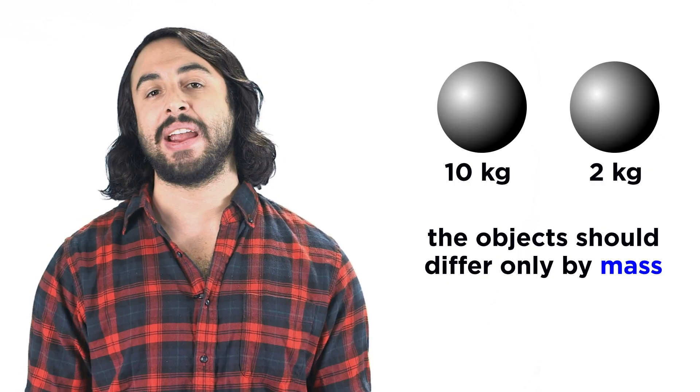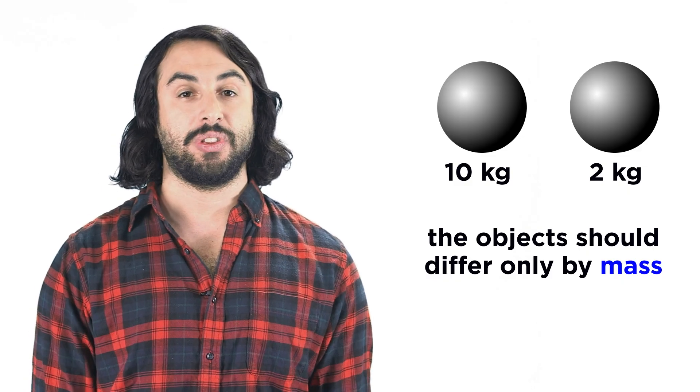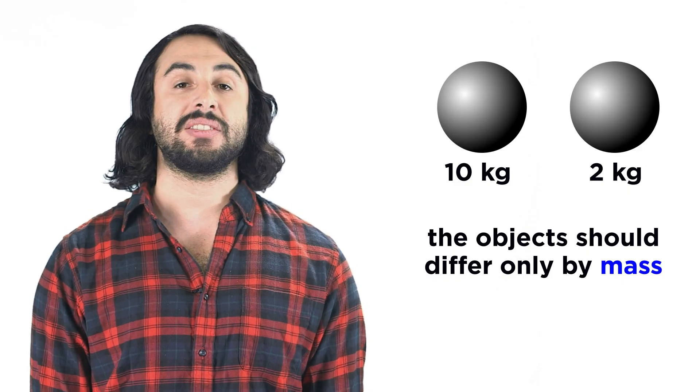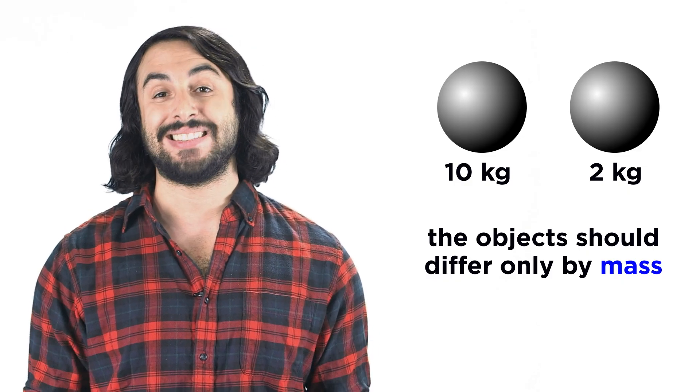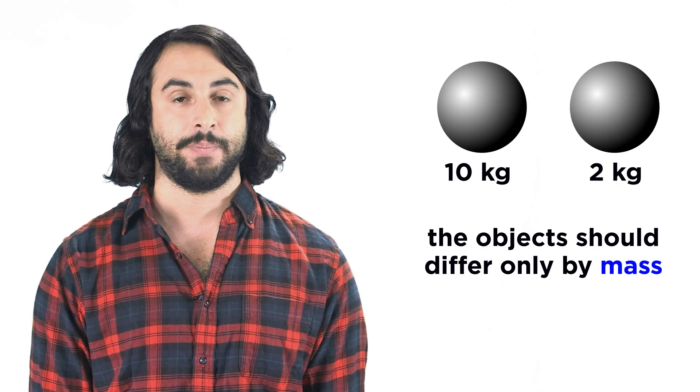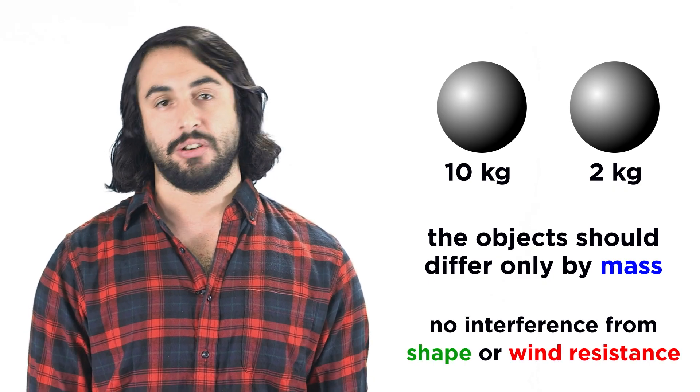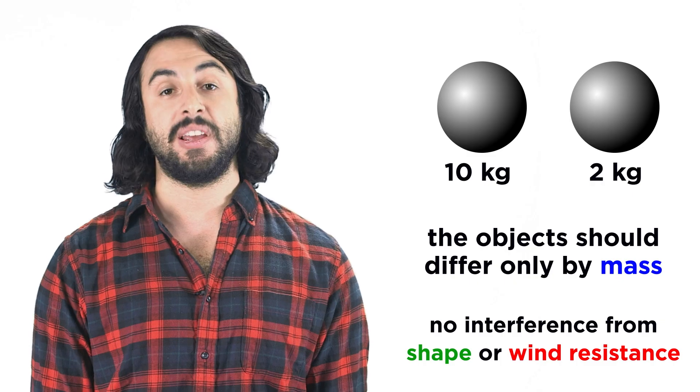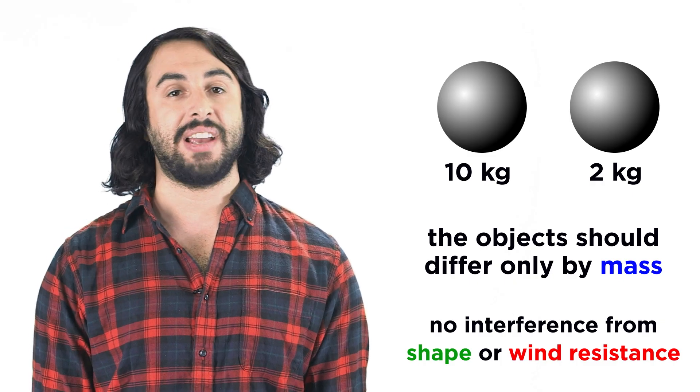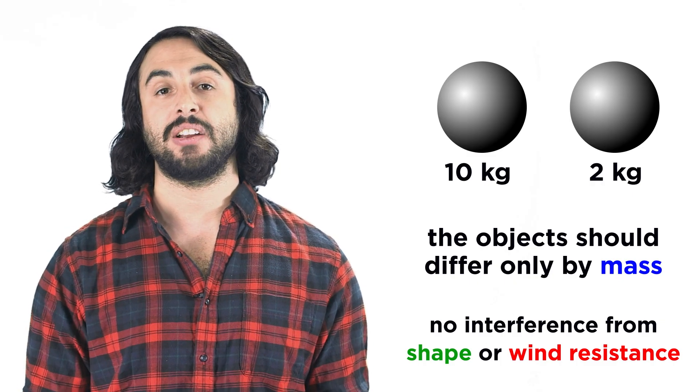So if we are testing how the rate of descent correlates with the mass of the object, we must drop two objects that are identical in every way apart from their mass. No other variables, like shape or wind resistance, should be involved. That way, all the data we collect will be specific to our inquiry.